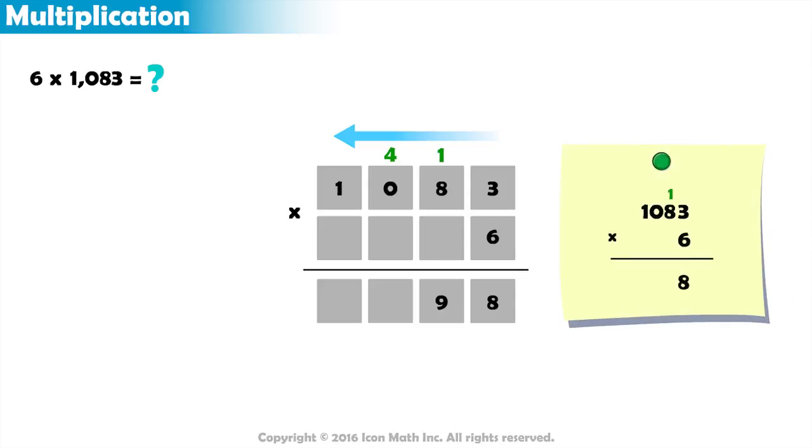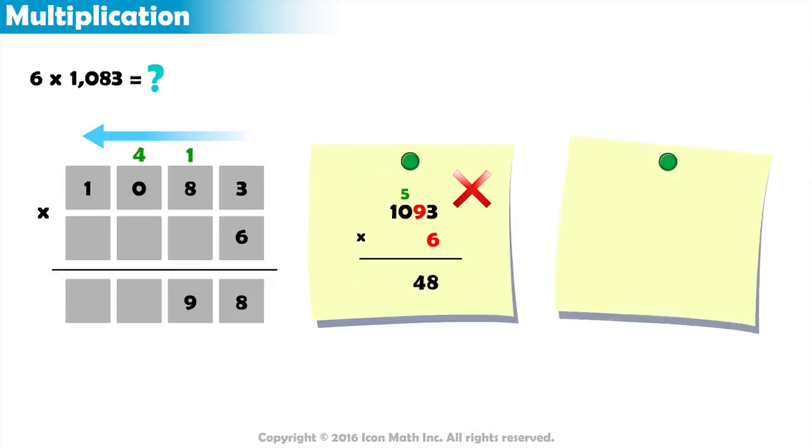Be careful not to add the carry to the digit underneath it when doing the multiplication. This is because the additional carry is the result of the multiplication of the previous column, so it is meant to be added to our results, not multiplied again.